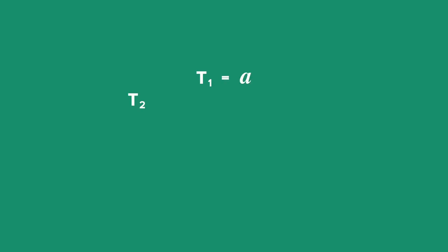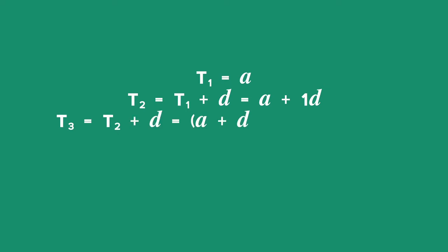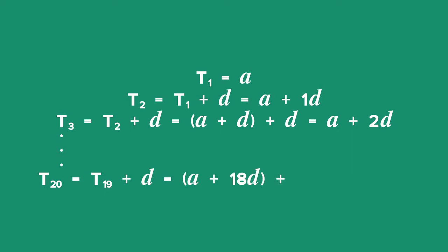General Term of an Arithmetic Sequence. We can derive a formula to find any term in an arithmetic sequence. Term 1 is equal to A. Term 2 is equal to term 1 plus D, which equals A plus 1D. Term 3 is equal to term 2 plus D, which equals A plus 2D. Term 20 will be term 19 plus D, which equals A plus 19D. We notice that in each term the formula consists of A plus a multiple of D, where the multiple is always 1 less than the subscript N corresponding to the position of the term.